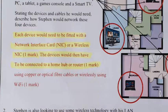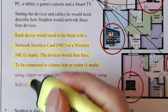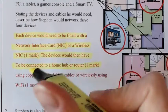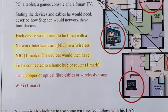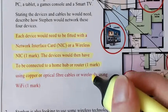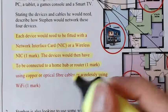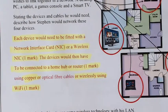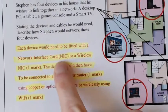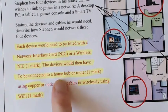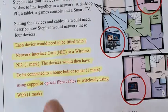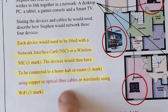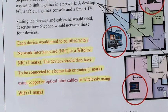For your third mark, it's about how you connect these devices to the router or hub. You're either going to use a wired connection — which may be copper or optical fiber, and in a house it's likely just copper — or you can use the wireless method, which is Wi-Fi. So that's your three marks: one for network interface card, one for connecting to a hub or router, and one for how you're actually connecting them.